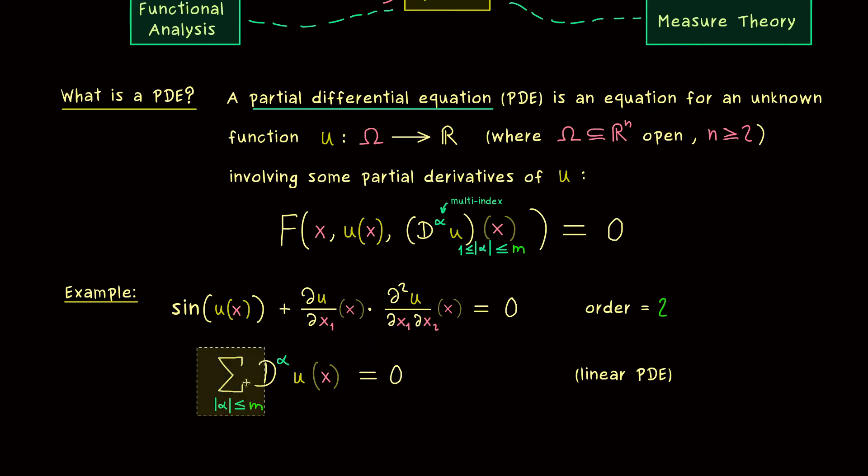Ok, but now the term linear also allows for coefficients in front. So if we want we could just take functions a with index alpha. So multiplying with functions that depend on x but not on u is allowed.